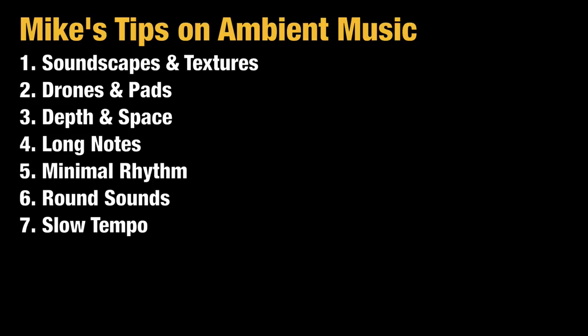Sixth is round sounds. Think about a sharp edge versus a polished round edge — that's what you want in ambient music. No sharp synth sounds, avoid sharp plucky sounds. Round them off by adding some attack with an ADSR envelope, filtering out the sharp high end, and so on. Seventh is, of course, slow tempo — that's basically the fundamental of ambient music. You really need a super slow tempo. Those are my seven tips.